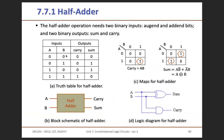Here we have two tables, a logic diagram of the half adder, and a block schematic of the half adder. We will look into how we reach the logic diagram of the half adder. The half adder operation needs two binary inputs, which are called the augend and addend bits, represented by A and B. It has two outputs: sum and carry.